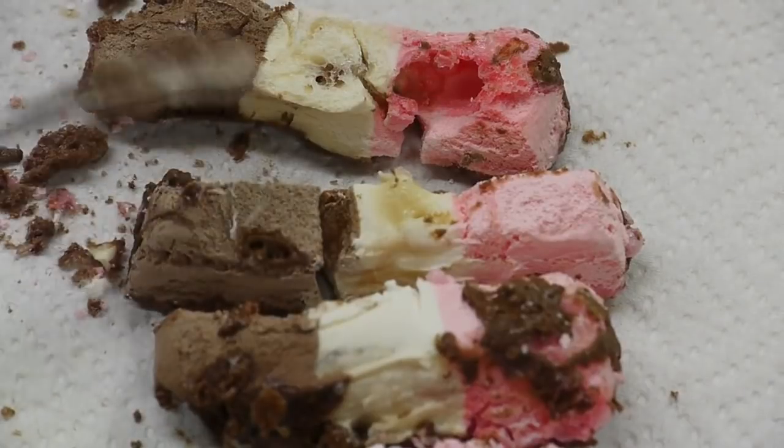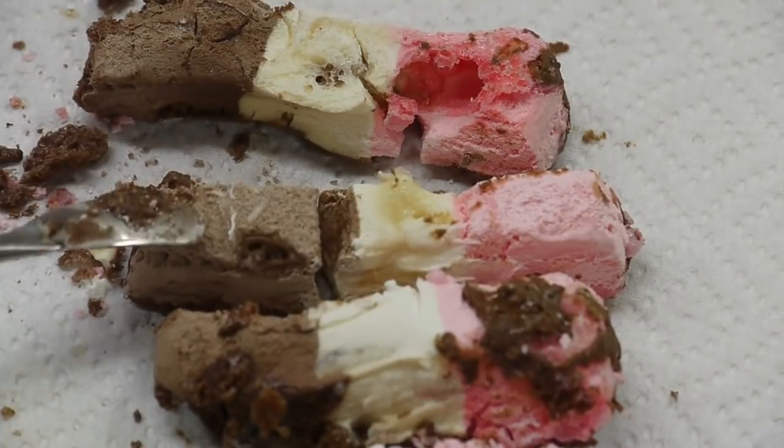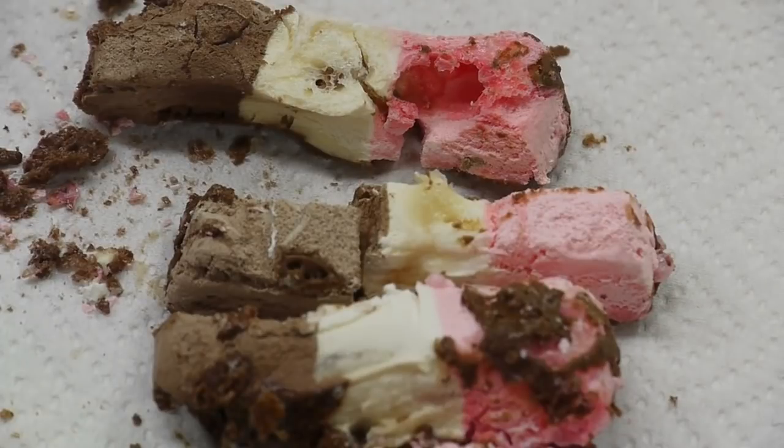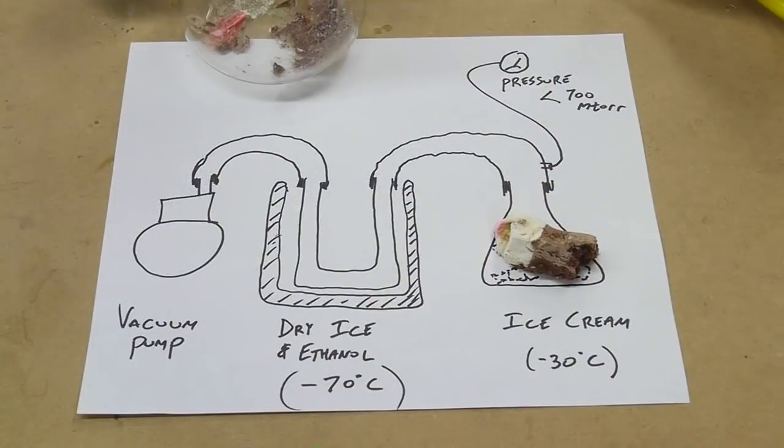Astronaut ice cream is just normal ice cream that has been freeze-dried, and the process of freeze drying allows us to remove water without letting the water melt first. In this case the water goes straight from ice, a solid, to vapor, and by doing this the structure of the ice cream is preserved.